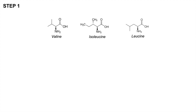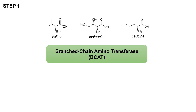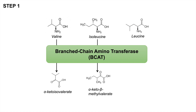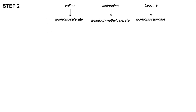The first step in branched-chain amino acid metabolism involves the enzyme branched-chain amino transferase, or BCAT. Valine gets converted to alpha-keto-isovalerate, isoleucine gets converted to alpha-keto-beta-methylvalerate, and leucine gets converted to alpha-keto-isocaproate. These three are known as alpha-keto acids.